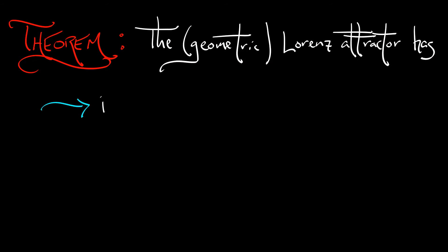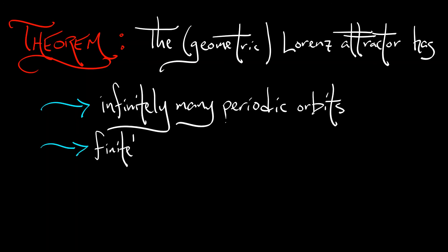The geometric Lorentz attractor has the following dynamical features. First of all, infinitely many periodic orbits. That's cool. Finitely many periodic orbits of each period. Whereby period, I mean period in the Poincaré map.